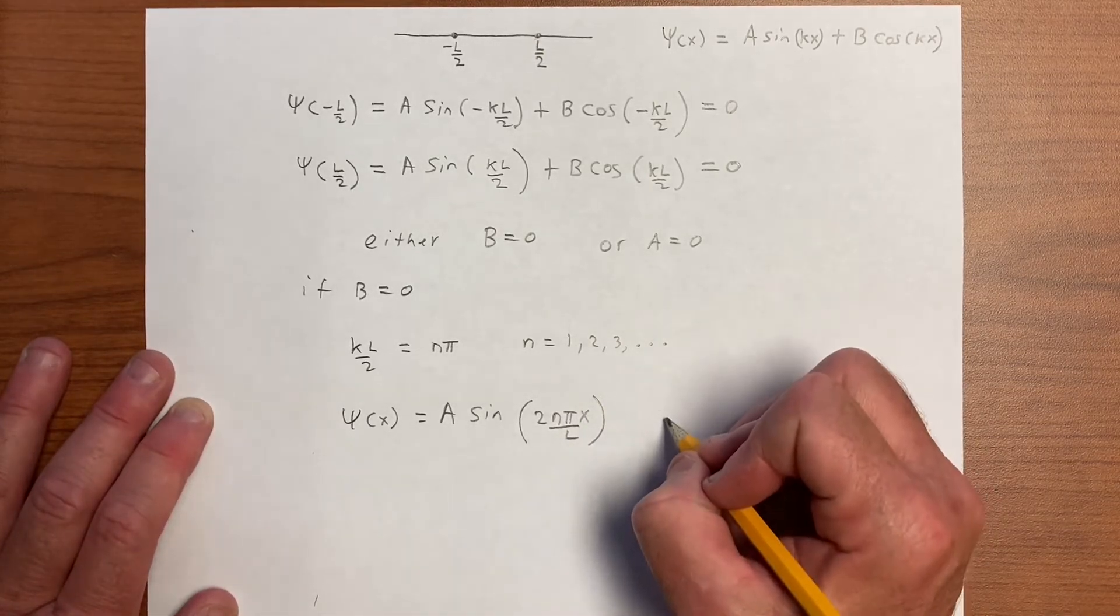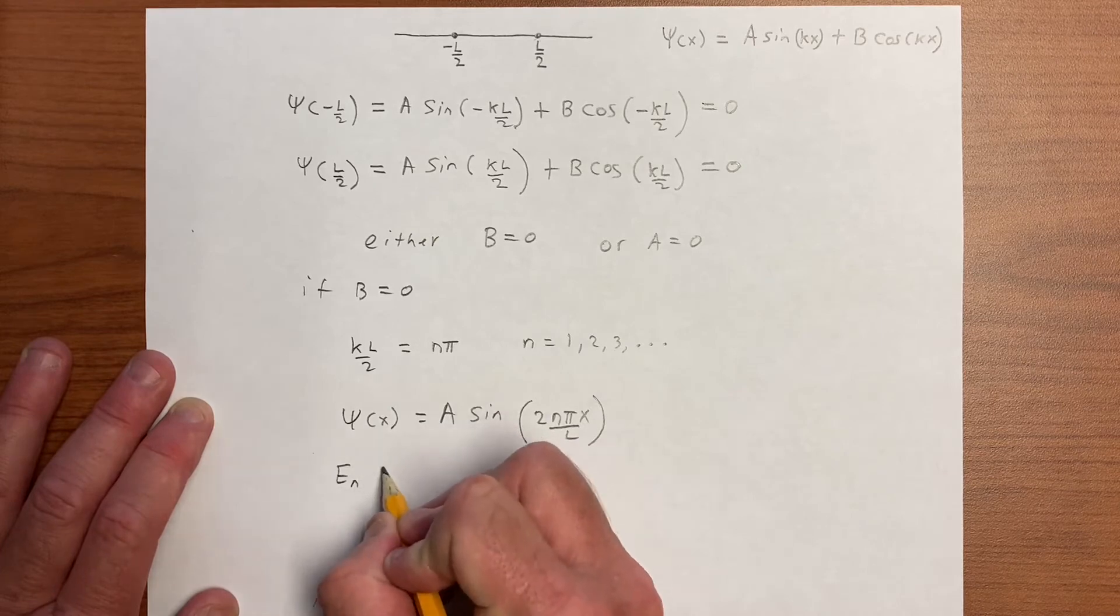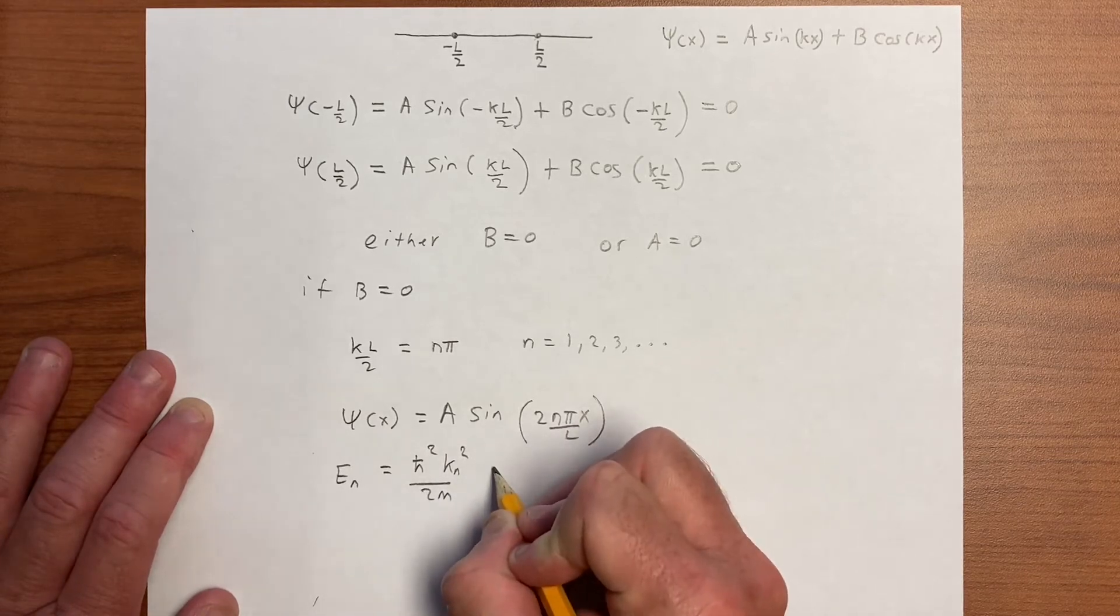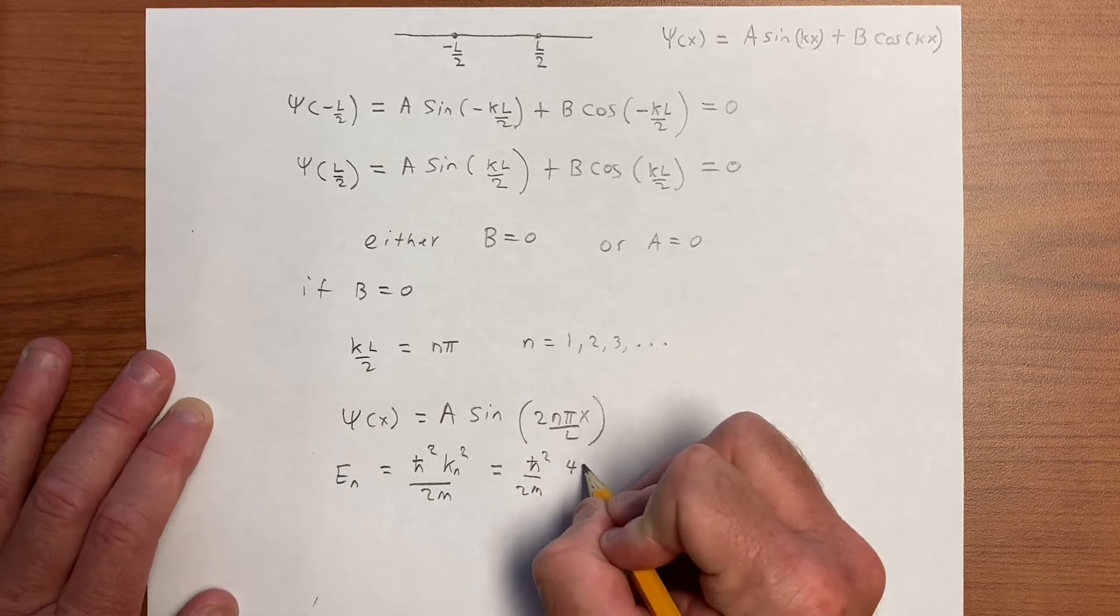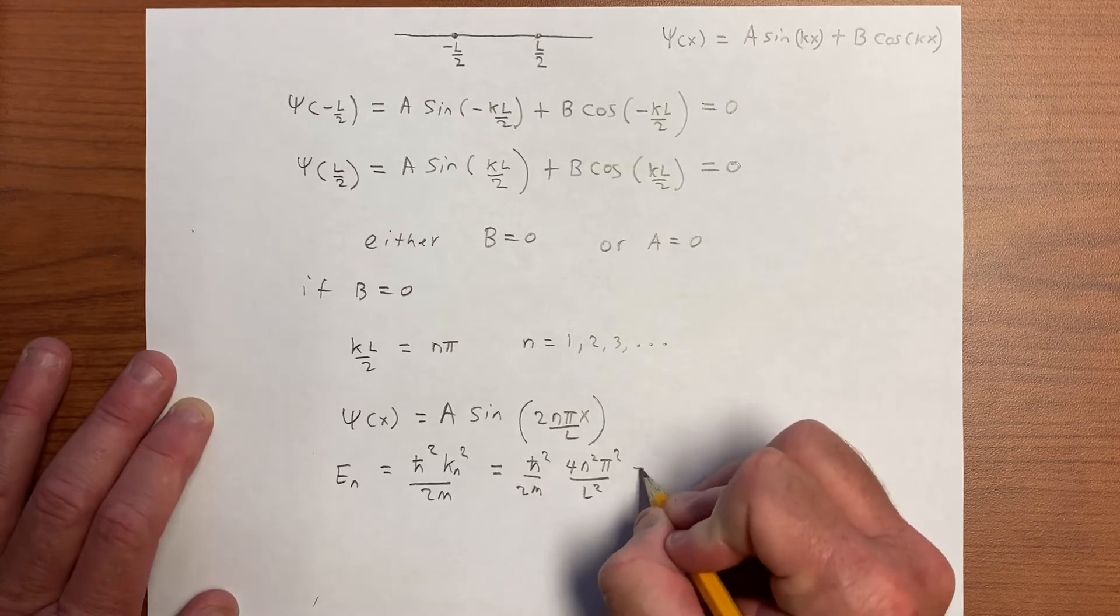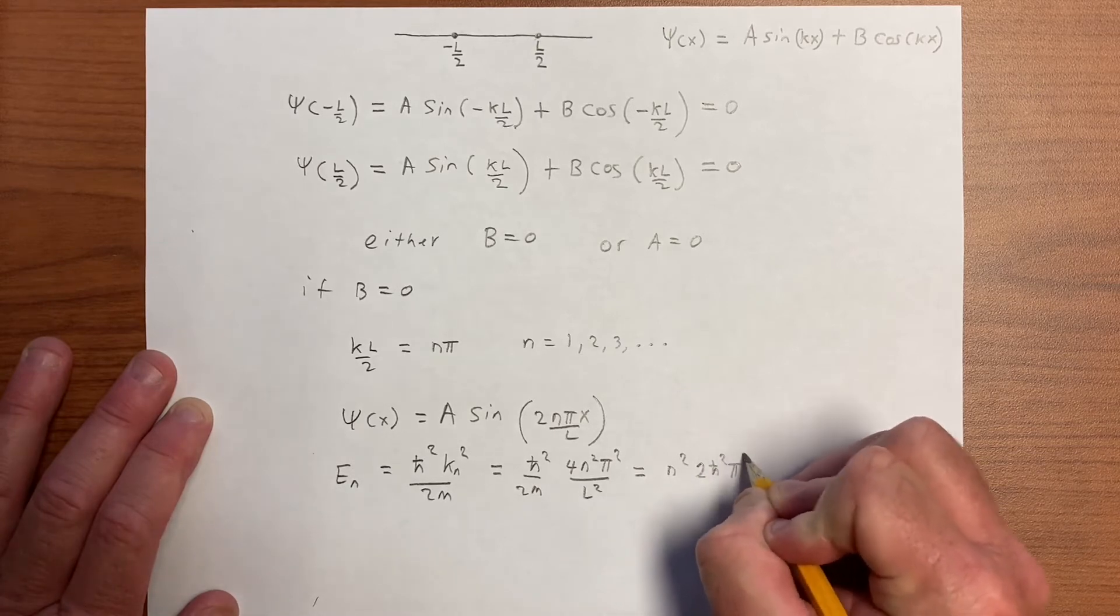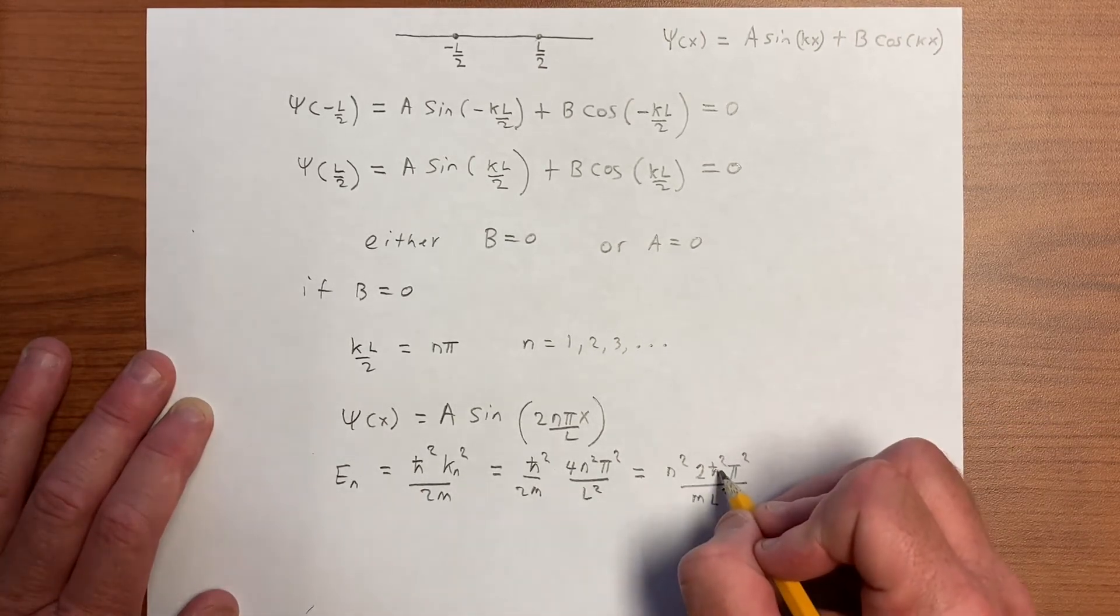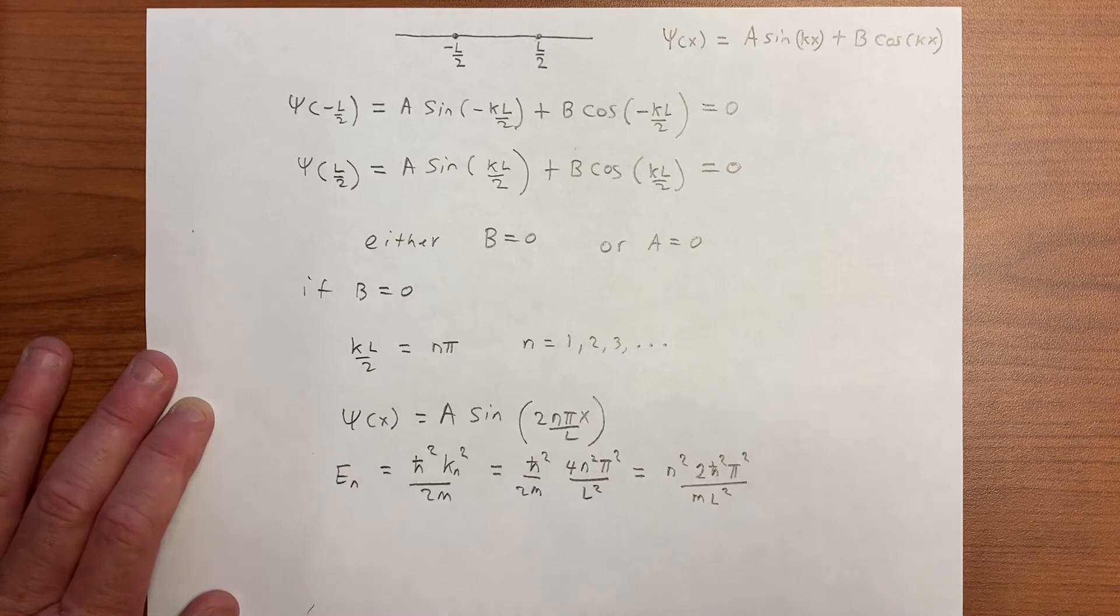The function psi of x looks like A sine of 2 n pi x over L, and we impose a boundary condition. The En's are h squared k n squared over 2m, and this gives us h squared over 2m times 4 n squared pi squared over L squared. And this overall gives us n squared 2h bar squared pi squared over mL squared. We can simplify this further, because h bar is h over 2 pi, and so there's a hidden pi in here, but let's just leave it like that.